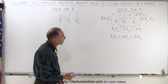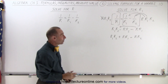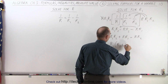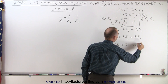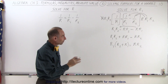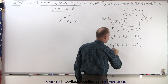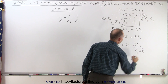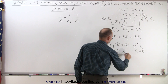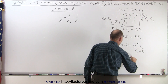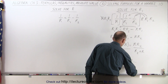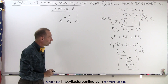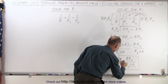The next step is to isolate R1 by factoring it out of the two terms on the left. This becomes R1 times the quantity R2 plus R, equals R times R2 on the right side. Finally, I divide both sides by the factor R2 plus R. On the left, it cancels out, and I'm left with R1 equals R times R2 divided by R2 plus R. That's our first solution, solving for R1.